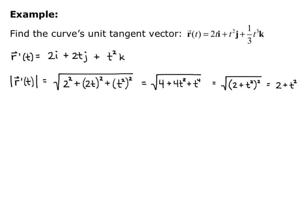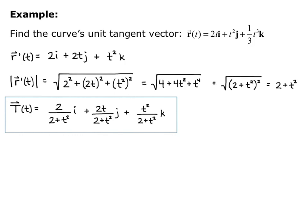And I know that the unit tangent vector, capital T of lowercase t, is equal to 2, which is my i component, divided by the magnitude of r prime, so 2 over 2 plus t squared as my i component, plus 2t over 2 plus t squared as my j component, plus t squared over 2 plus t squared as my k component. And that is my unit tangent vector for the curve, r prime of t divided by the magnitude of r prime.